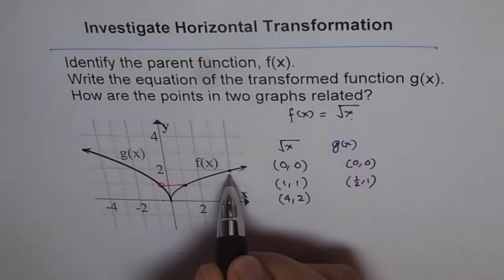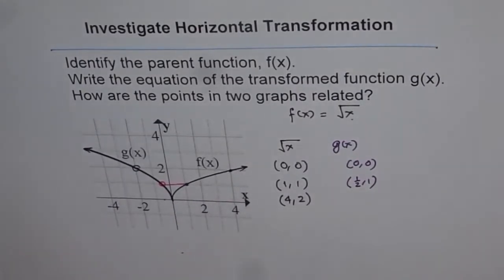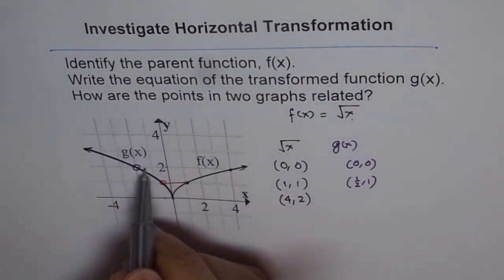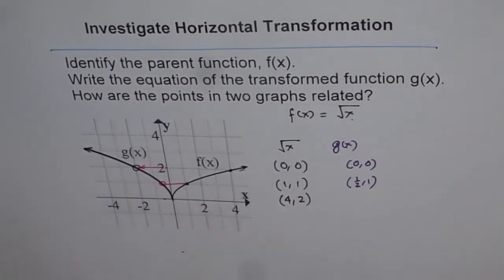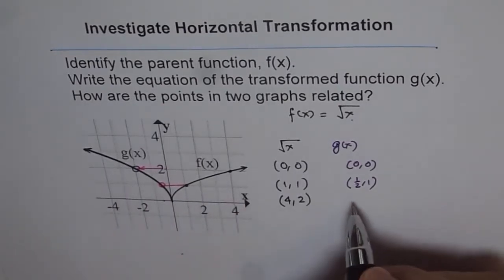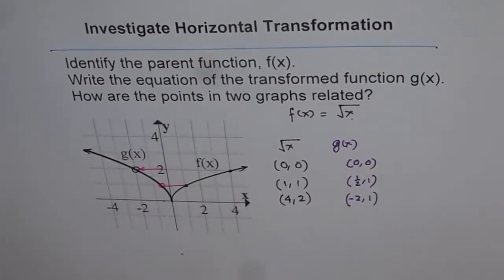The other point, which was at 4, 2, if you compare that, it is here now. So that point has actually reflected, and it is half way. So it could be written as half way of 4, minus 2. So instead of at 4, it is at minus 2, but y value is same. So that is what we notice.